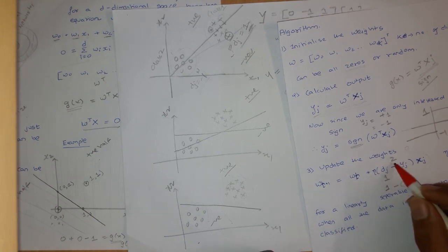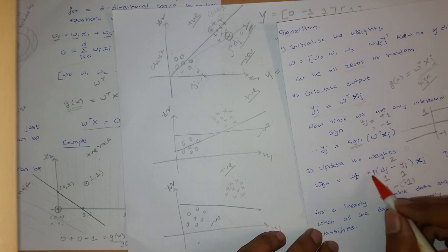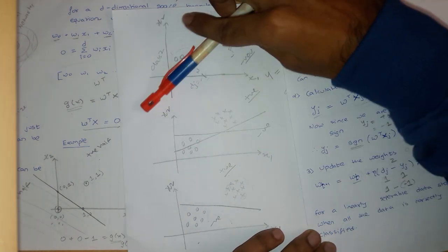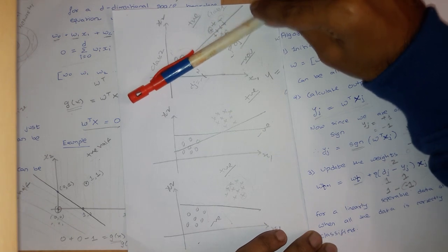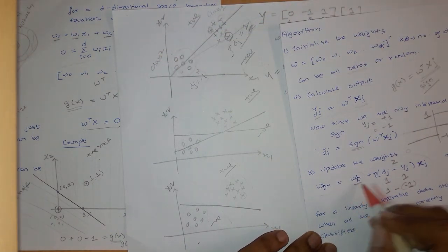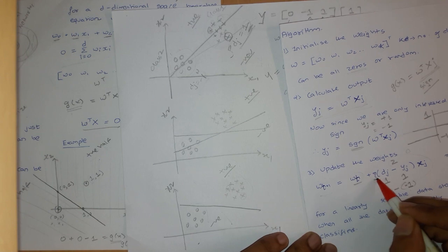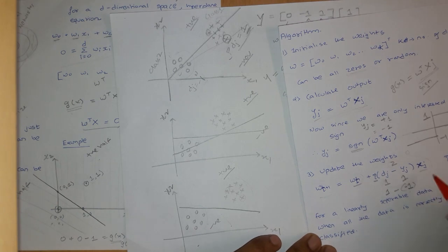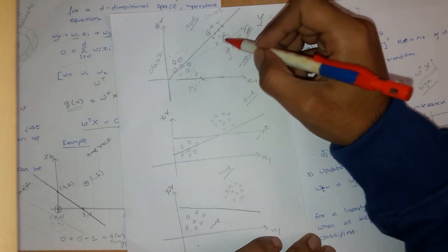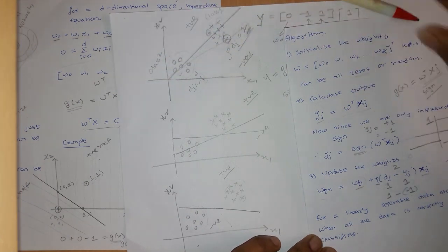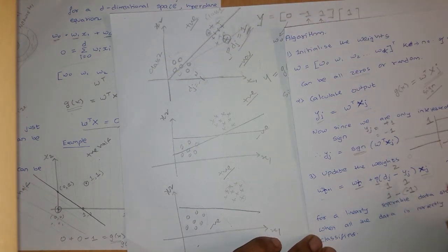When there is a mismatch, we update the weights. The new weights are the old weights plus eta times (dj minus yj) times xj. So we are shifting the weight vector towards the input xj by an amount proportional to the error.